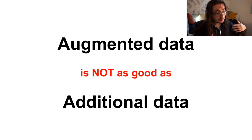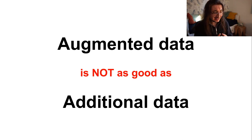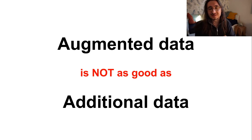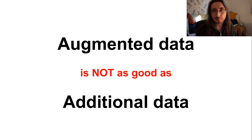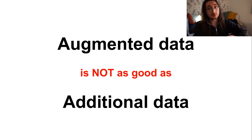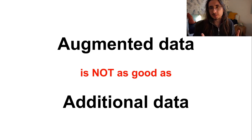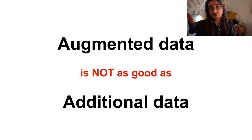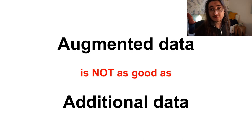Remember that augmented data is not as good as additional real data. The augmented data you derive is still derived from original data — so you have variants of original samples, but these are not truly new samples. If you had two datasets with the same number of samples, one with all original data and one with augmented data, the one with original data would be qualitatively better because you have more variety.